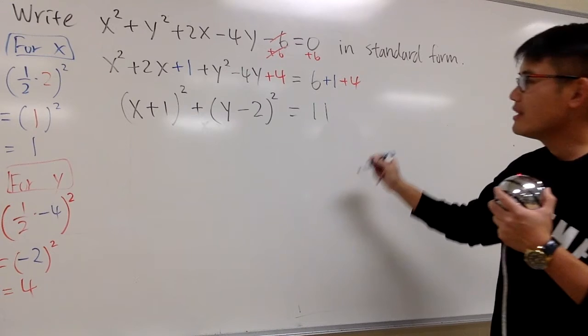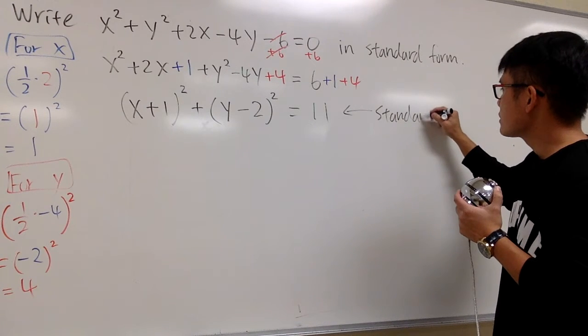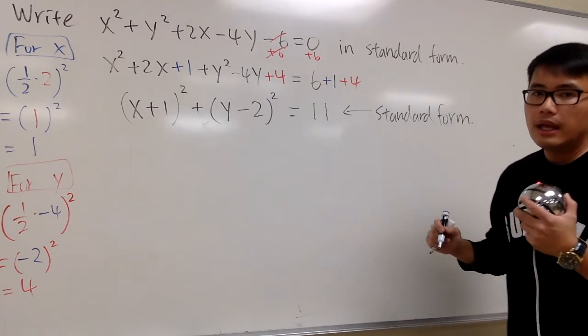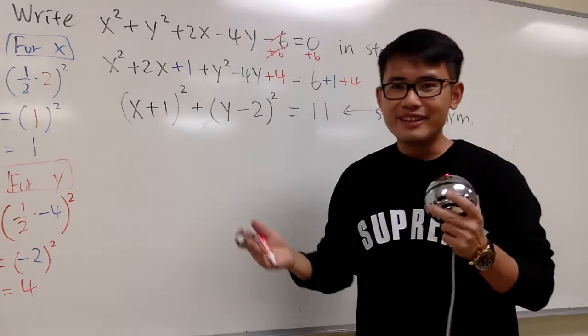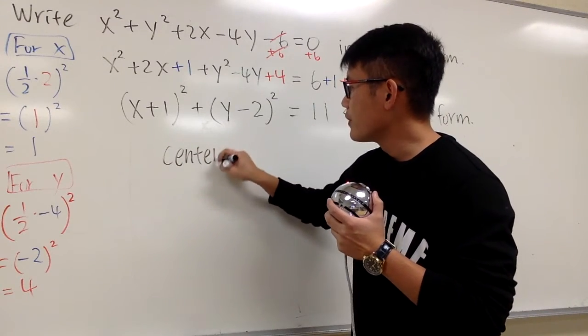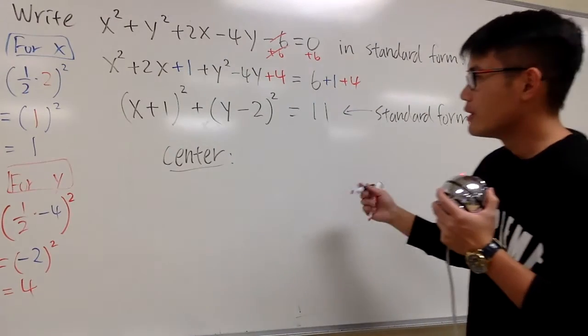And here we have it. This is the standard form of a circle. And can we tell the center and the radius from here? Of course. Right?